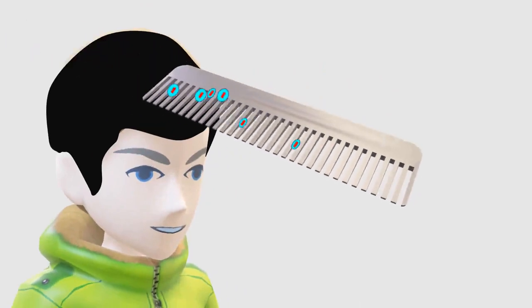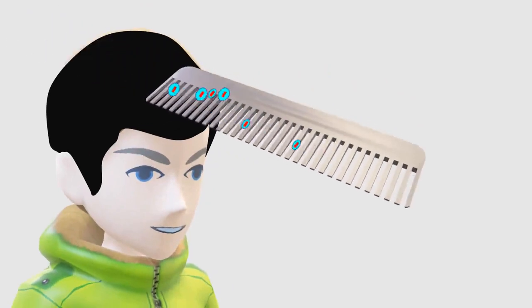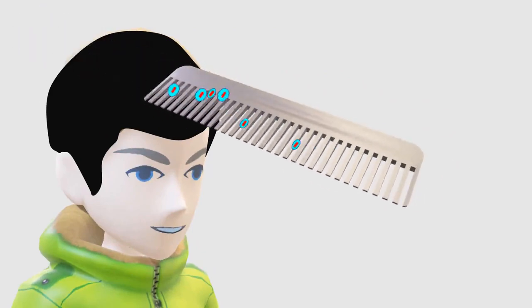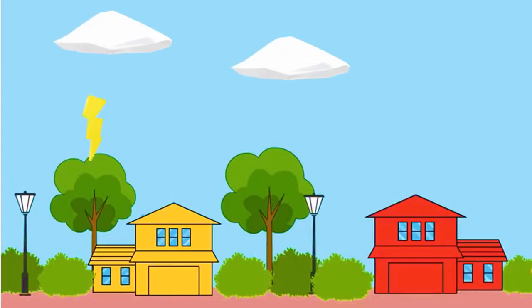When comb is rubbed with hair, some electrons transfer from hair to comb. Lightning is actually a gigantic electrical discharge between two charged clouds or between a cloud and earth.